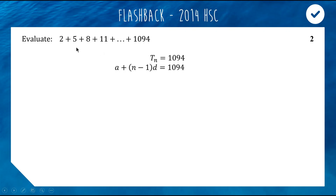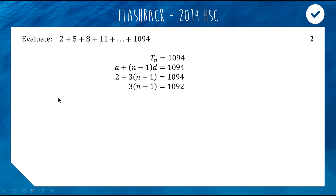So we can sub in 2 for a, we can sub in 3 for d, and then we have an equation to solve to find out what n is. So we take the 2 across, we expand the expression — we can just divide by 3, much smarter. And now just add the 1 across, and we get that there are 365 terms in this series.